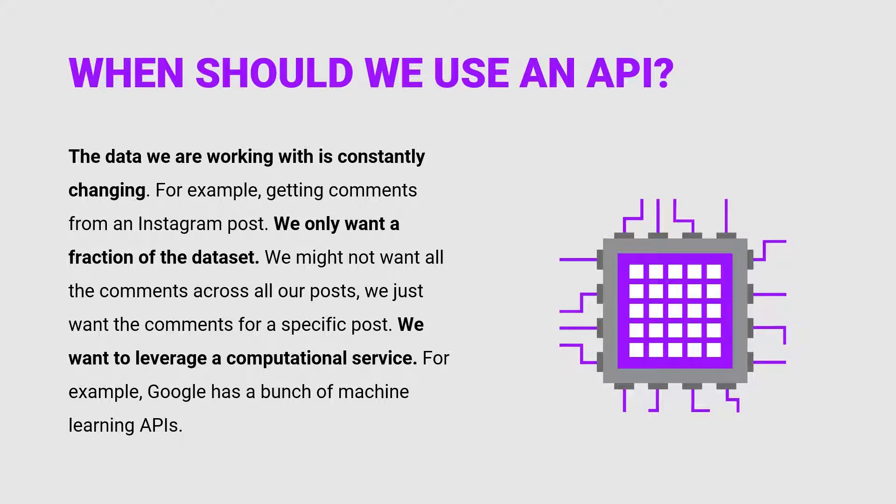So when should we use an API? Naturally, a lot of people ask: if I can just go get a spreadsheet with all the data, does it make sense to use an API? It really depends on what you're trying to do. If you're working with data that's constantly changing — for example, something like a Twitter feed — to constantly download a spreadsheet with all that data could be very time consuming, and most companies aren't going to have a spreadsheet ready for you to download anyway. With an API, requesting that information can be fully automated, just requesting it every couple of minutes, and it's a lot easier. So if you're working with data that's constantly changing, you should probably be using an API.